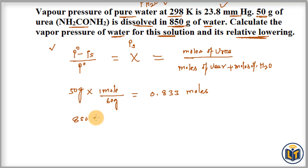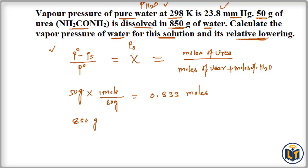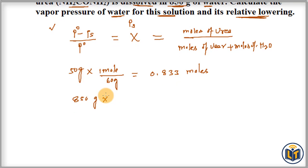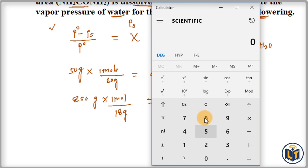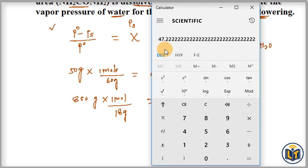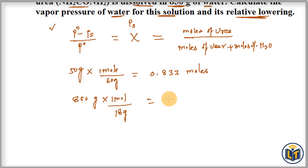Next, the mass of solvent is 850 grams. We convert this to moles using the molar mass of water, which is 18 grams per mole — a common value. Dividing 850 by 18 gives us 47.22 moles of H₂O.